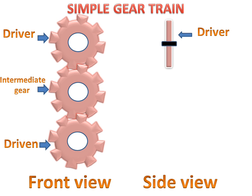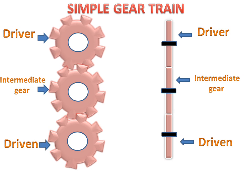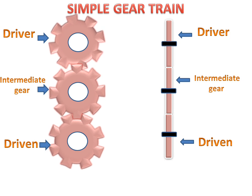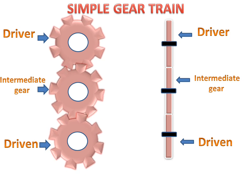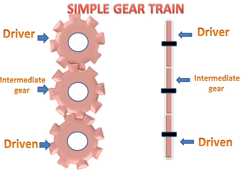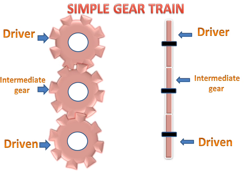We will see the side view of the simple gear train. This is the driver, this is the intermediate gear, and this is the driven gear. When the driver rotates, the intermediate gear will rotate, and then the driven gear will rotate. This is the working of the simple gear train.